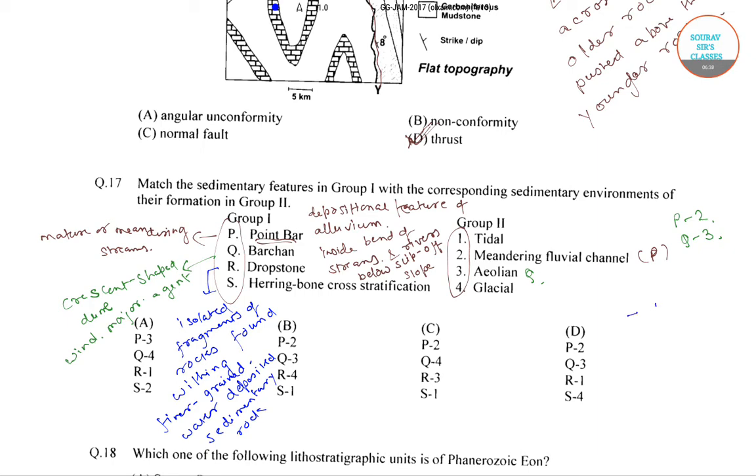There are five natural mechanisms that produce dropstone: first is glaciers, next is volcanoes, then turbidity currents, next is biological raft, and last is meteorite. From this we can say that the correct corresponding sedimentary environment for dropstone is glacial, so we have R-4.